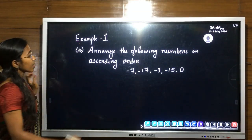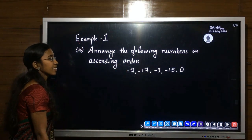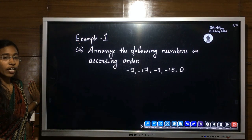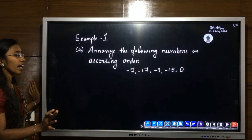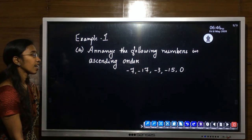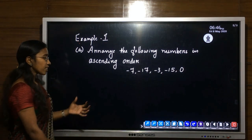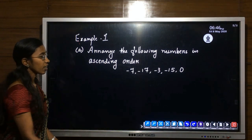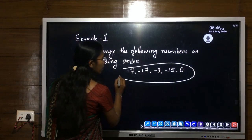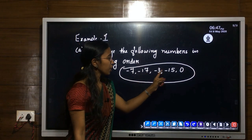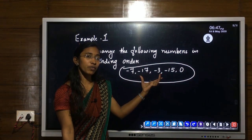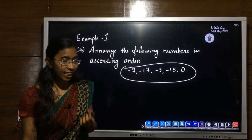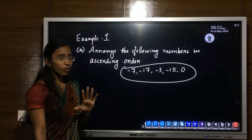First example: arrange the following numbers in ascending order. The numbers are minus 7, minus 17, minus 3, minus 15, and 0. Five numbers are there. Ascending order means increasing order, so first write the smallest number and the last one must be the largest number. In these 5 numbers, the first 4 are negative numbers. The speciality of negative numbers is that the largest value with a negative sign is the smallest number.